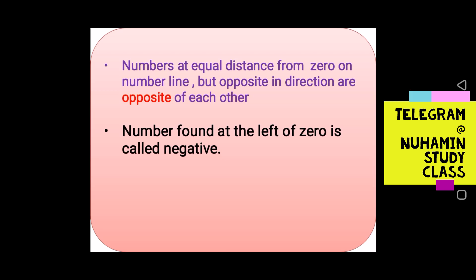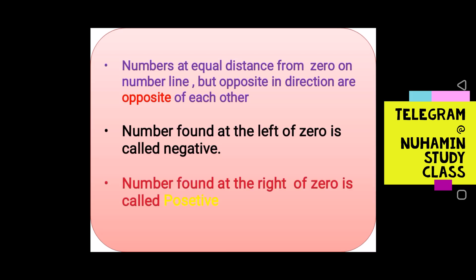The number found to the left of zero on the number line is called a negative number. The number found to the right of zero on the number line is called a positive number. Zero is neither negative nor positive.